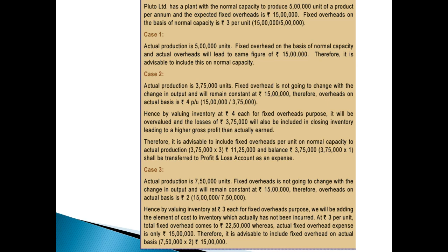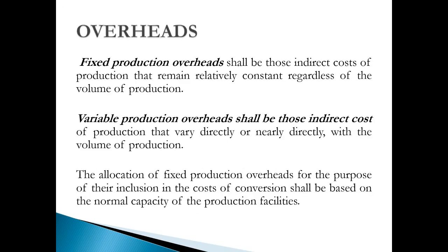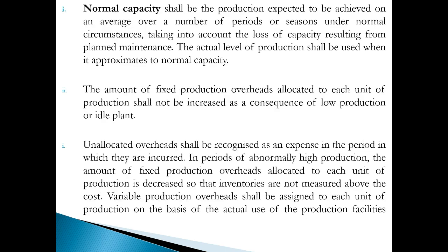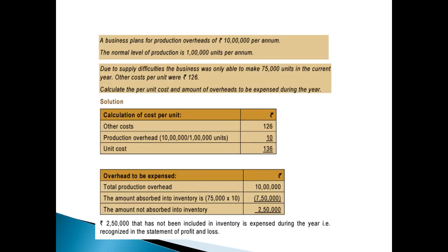These columns for joint products and byproducts are also there in Form 6C. As practicing professionals, we have to proactively evaluate the draft Form 6C and apply our minds to what practical situations may arise, and make suggestions to the department before actual implementation. This is how joint products and byproducts are handled under ICDS 2.